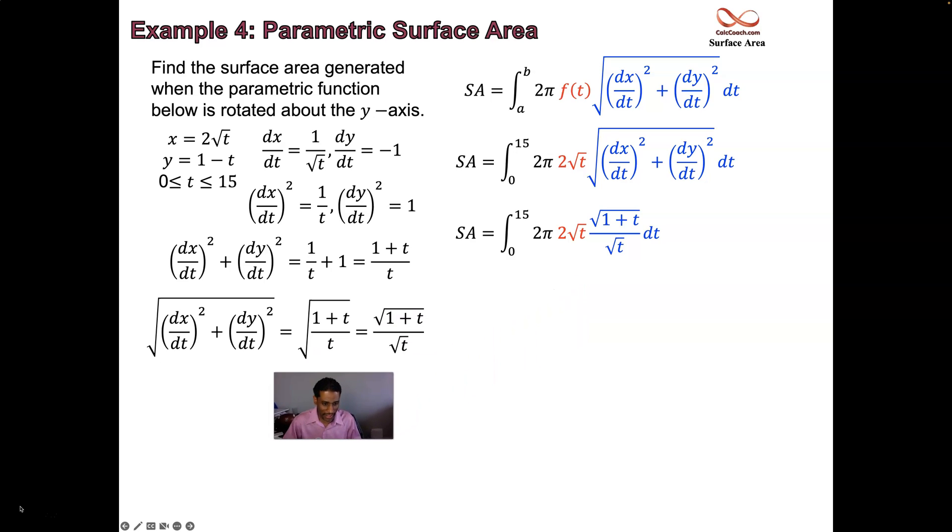We arrive at an integral that is very doable. The 2's can come outside as a 4. The π can come outside. The integral goes from 0 to 15, because that's what t does. And you're just integrating √(1 + t). Because 1 + t has itself as its derivative, you can just treat it like it was √t.